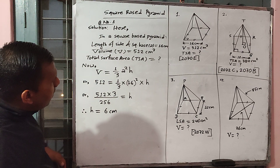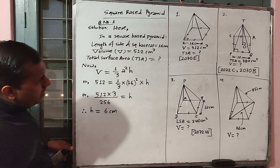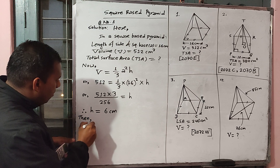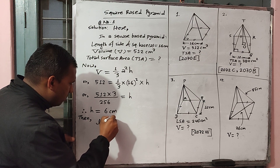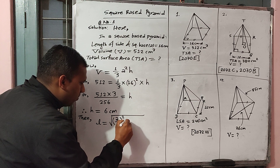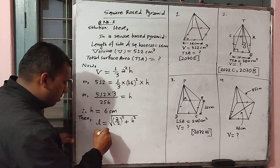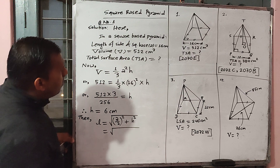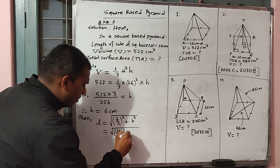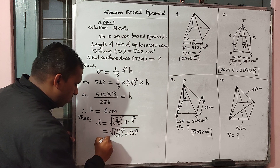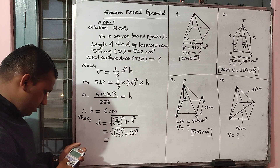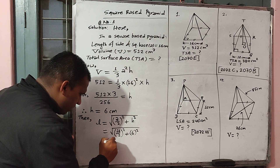So vertical height is 6 cm. After this, you can find the slant height to get TSA. Then Z equals square root of (A/2) squared plus X squared. This equals square root of (16/2) squared plus X squared, where X is 6.